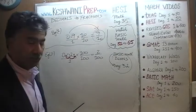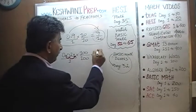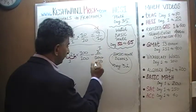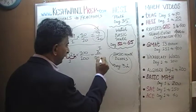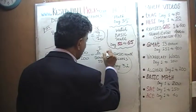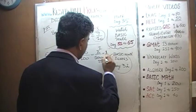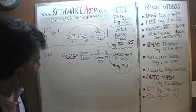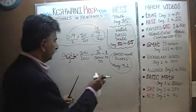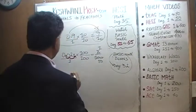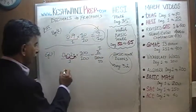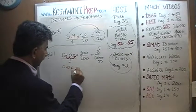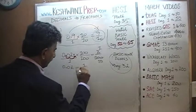Let's divide top and bottom by two. Two divided by two is one, and a hundred divided by two is fifty. So the final answer is one over fifty — one fiftieth. Point zero two is equal to one fiftieth.